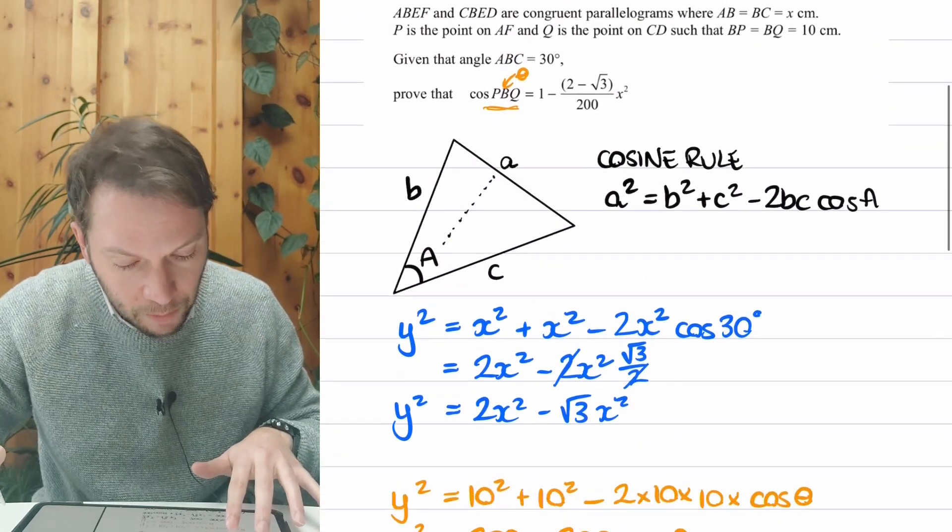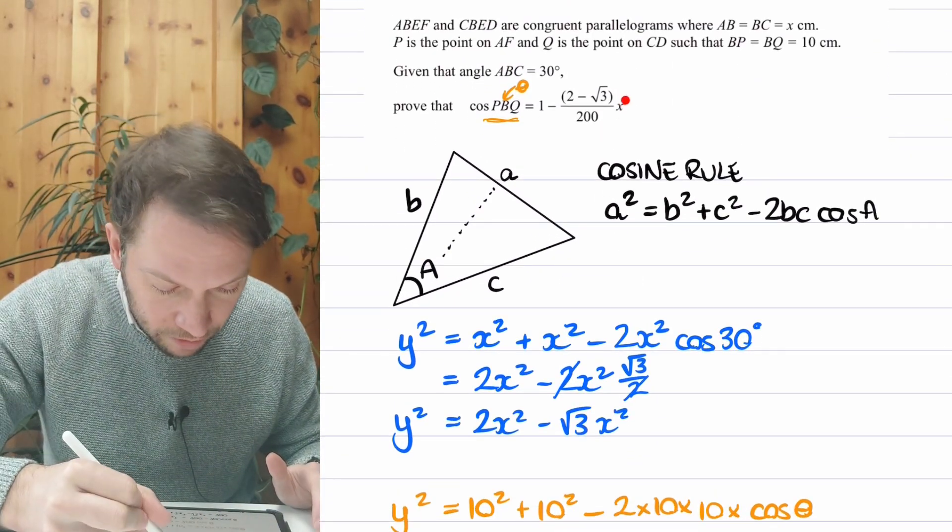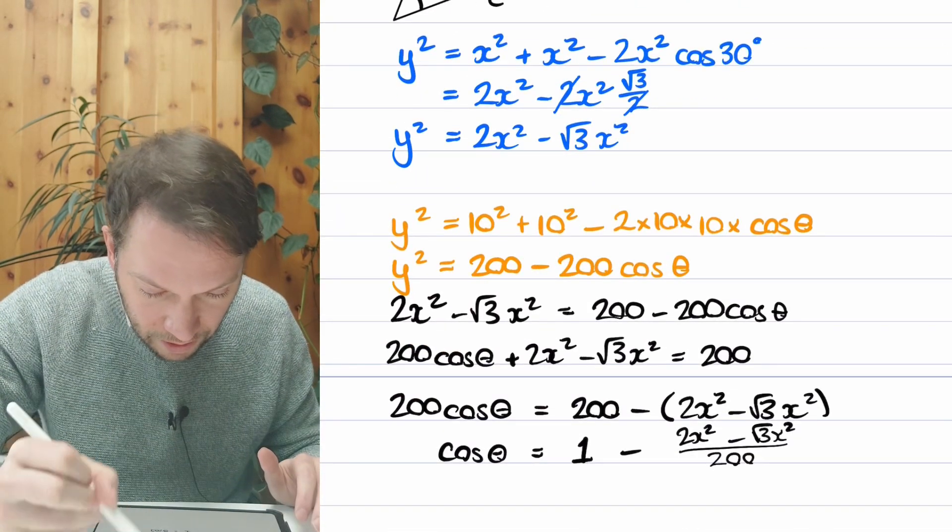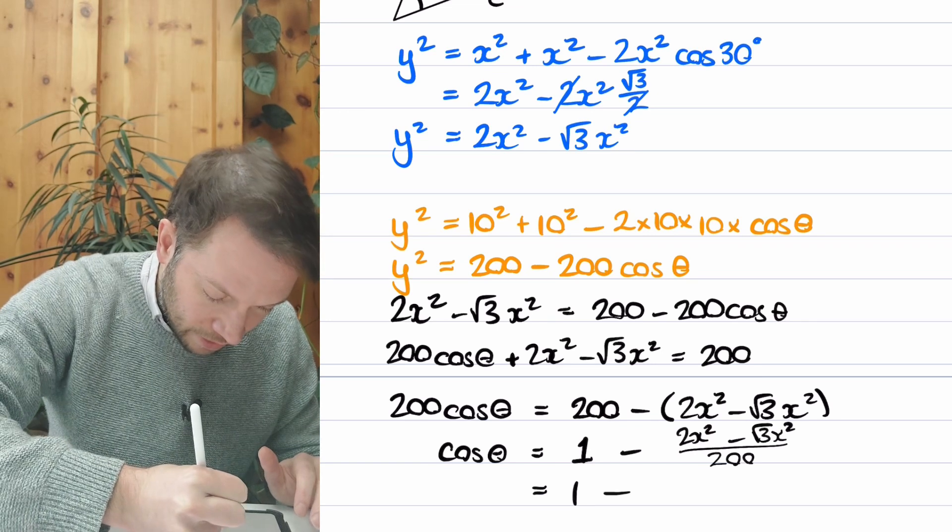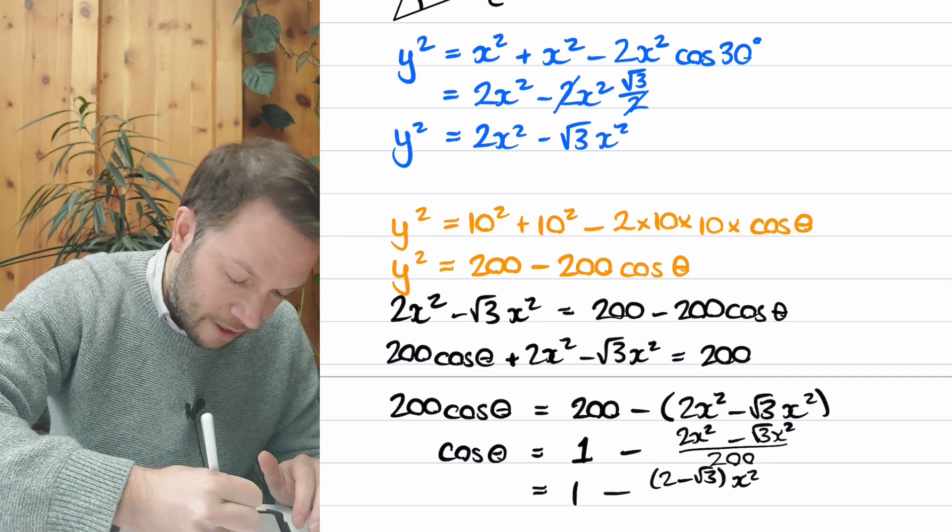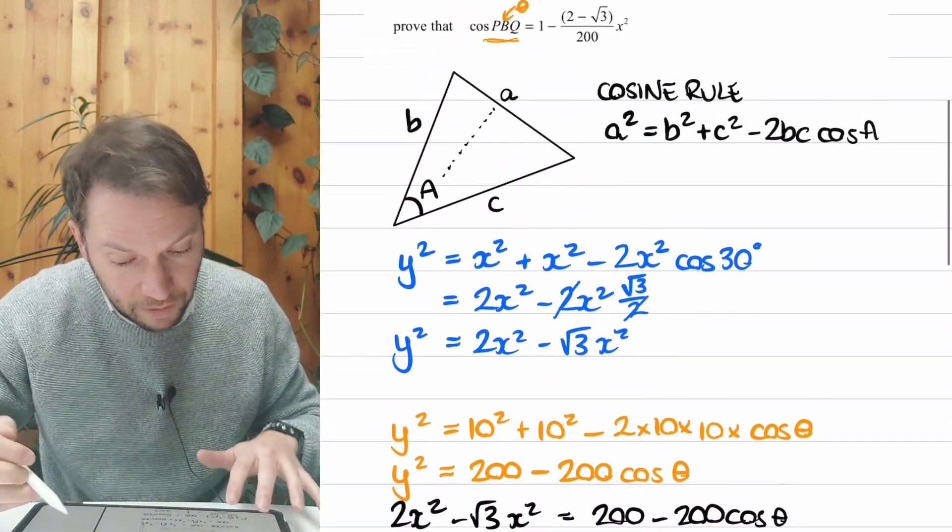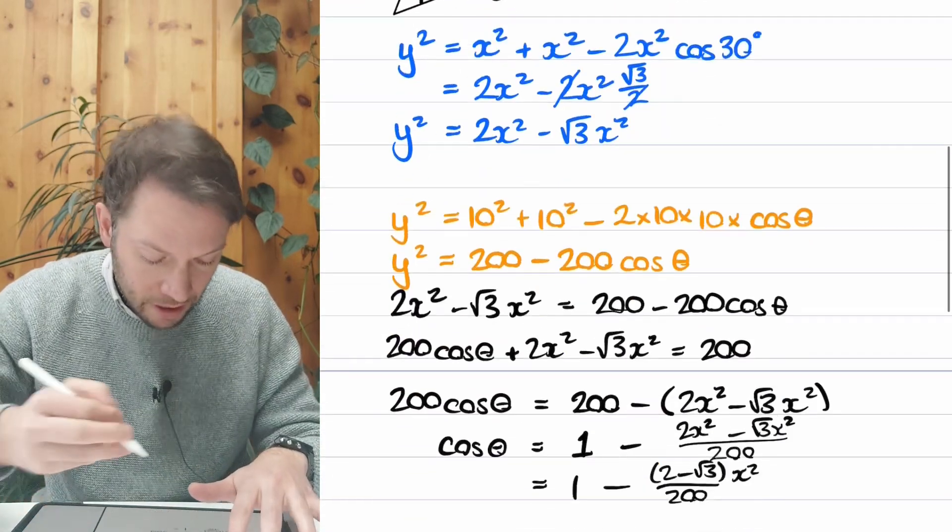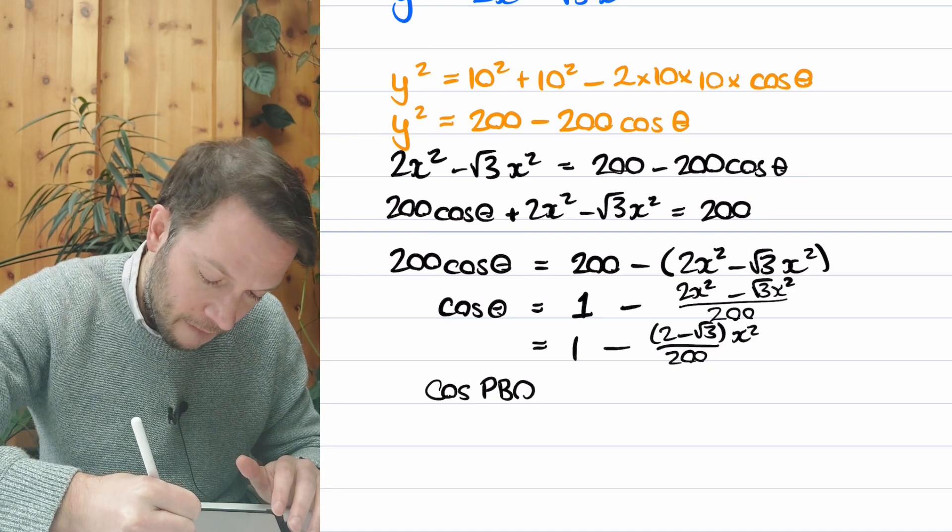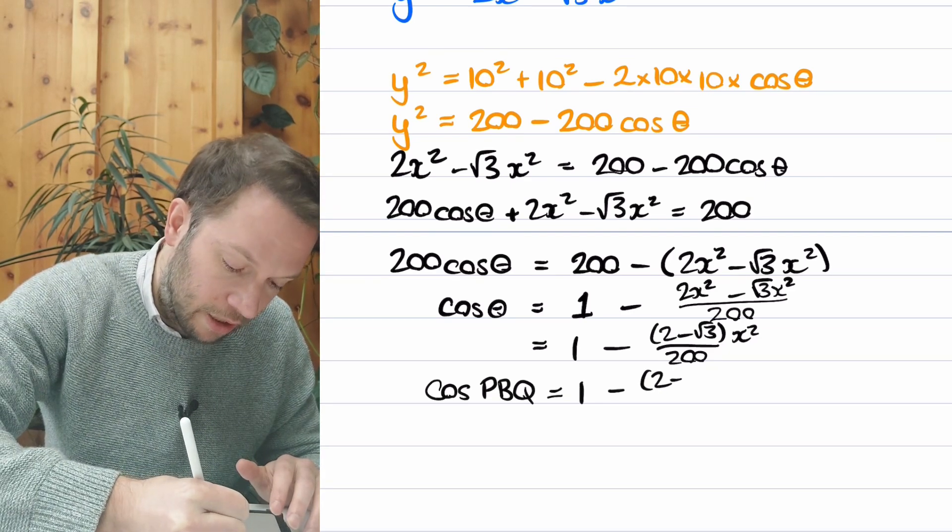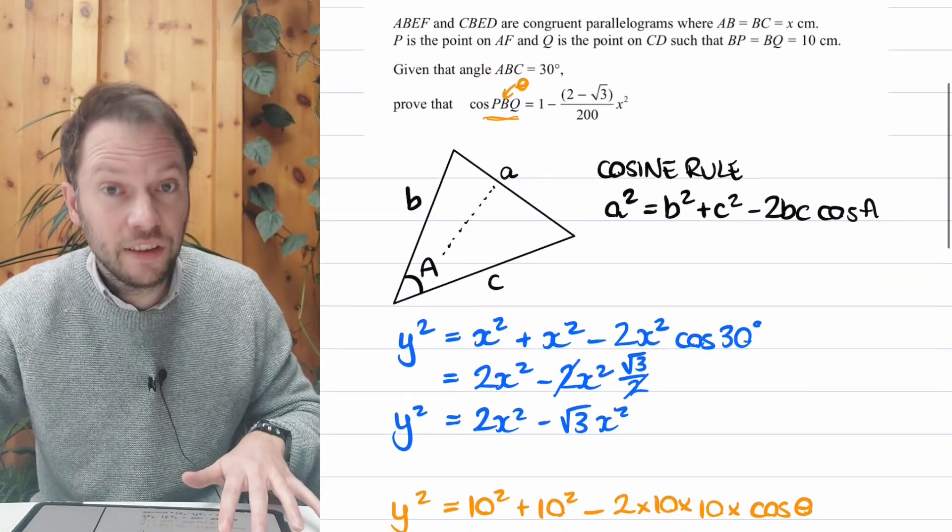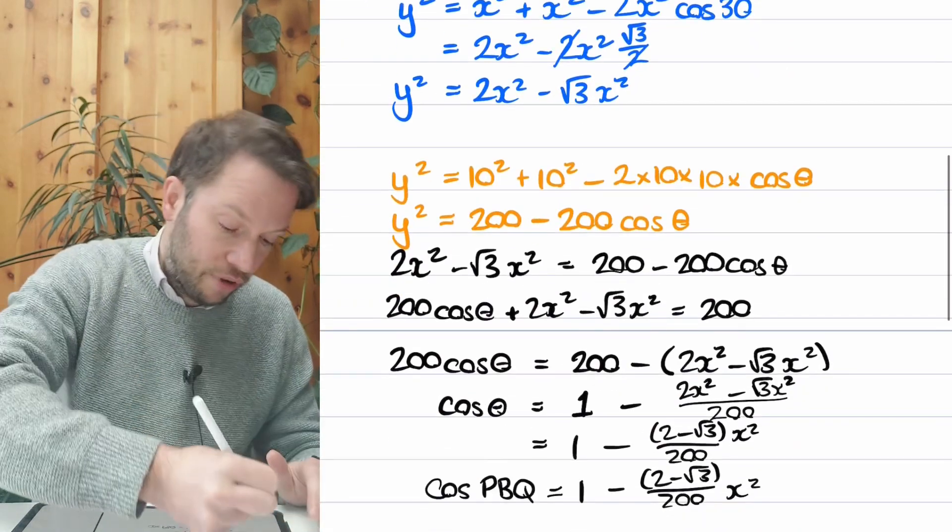And it's very close now. I can see that the X squared here is sort of outside the fraction, and they sort of factorize that 2 minus root 3 out. So we could do that. But we've got 1 minus, and then factorize the X squared out, we've got 2 minus root 3 times by X squared over 200. And because we said the theta was equal to PBQ, if we just write that explicitly, we've got cos of angle PBQ is equal to 1 minus 2 minus root 3 over 200 X squared. And that exactly matches this expression we wanted to show. So the proof is complete. And that's the end of the question.